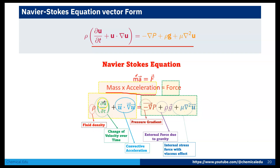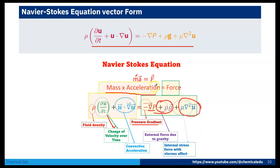Here ρ is fluid density. ∂u/∂t is the change of velocity over time, also called local acceleration. u·∇u is the convective acceleration. −∇p is the pressure gradient term. ρg is the external force due to gravity, or body force per unit volume. μ∇²u is the viscous term — the internal stress force with viscosity. That's it for the Navier-Stokes equation. Thank you.